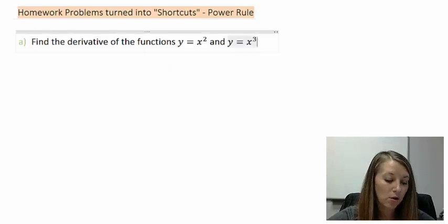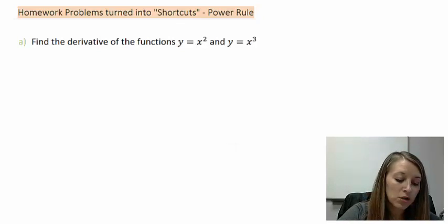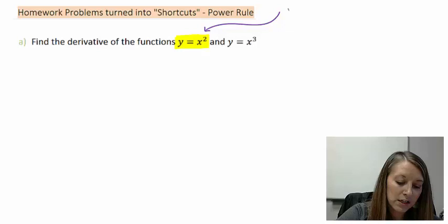Okay, so part A, find the derivative of the function y equals x squared. Again, I am not going to compute this or show you the work behind this because we already did this in the second foundation piece. So, we know that the derivative of this piece, dy dx, gives us 2x.